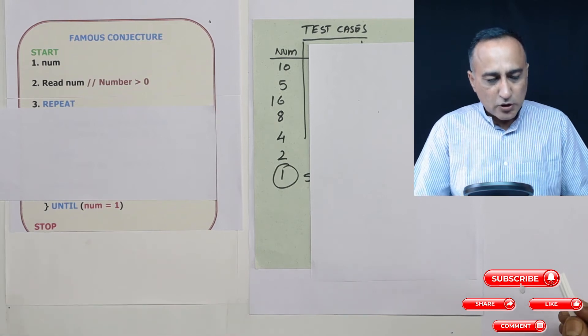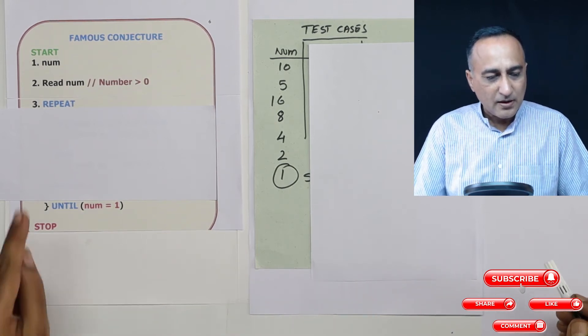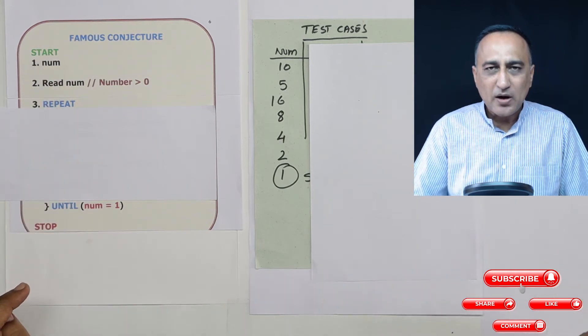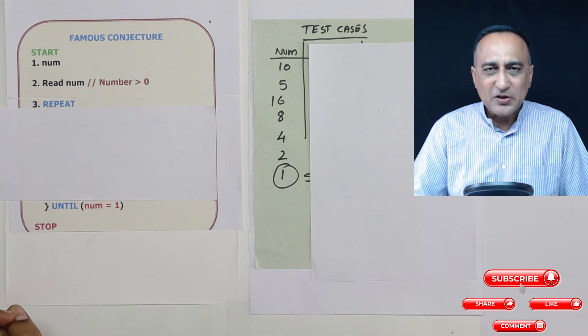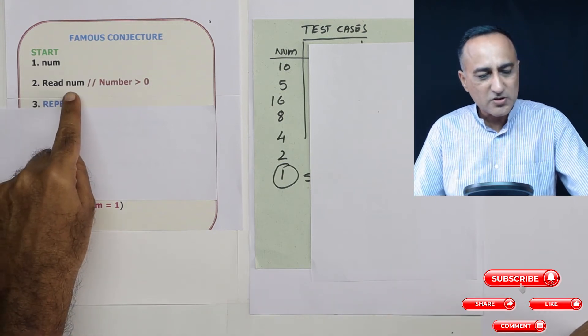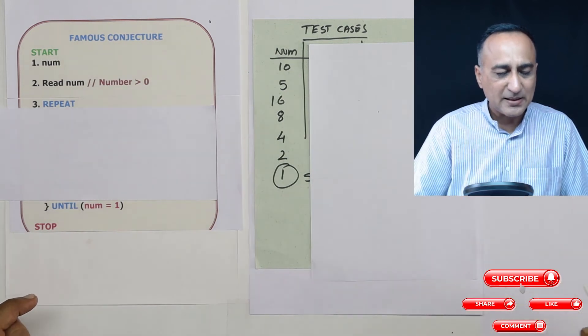In order to solve this particular problem, I am going to need a variable called number. Then I am going to ask the user to enter the value of the number from a keyboard. So user is going to enter a number.